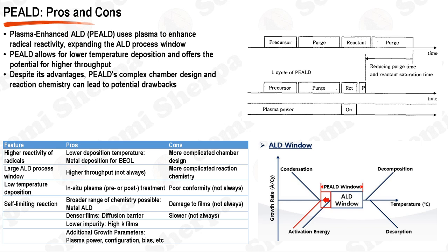On the downside, PE-ALD involves a more complicated chamber design and reaction chemistry. This can sometimes lead to slower deposition rates, poorer conformality, and potential damage to the films, although these drawbacks are not always observed. Furthermore, while PE-ALD can create denser films, this may not always be desirable, as it can affect the properties of the film in ways that may not be beneficial for certain applications.